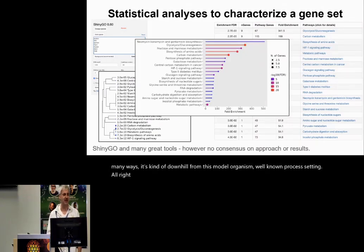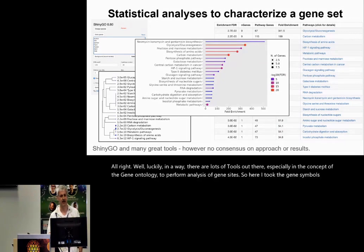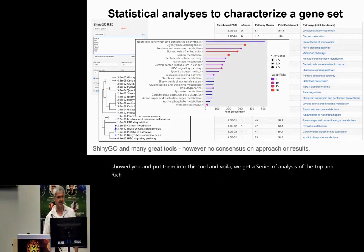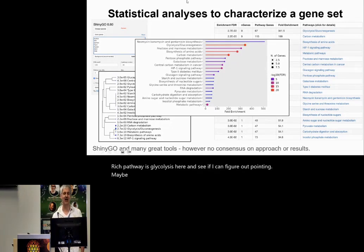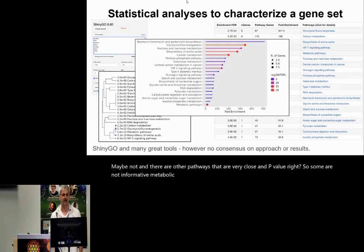Luckily, there are lots of tools out there, especially in the context of the gene ontology, to perform analysis of gene sets. I took the gene symbols I just showed you, input them into this tool, and voila, we get a series of analyses. The top enriched pathway is glycolysis here. There are other pathways that are very close in p-value — some are not informative metabolic pathways you would probably reject.